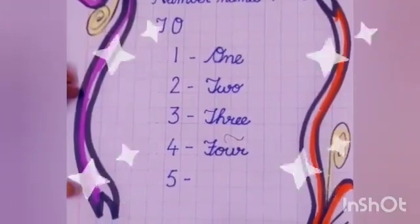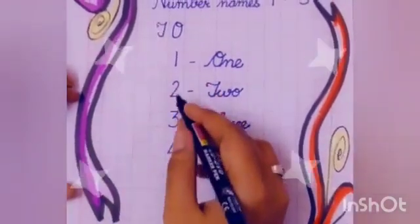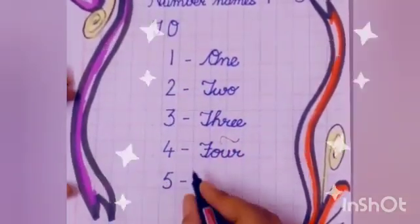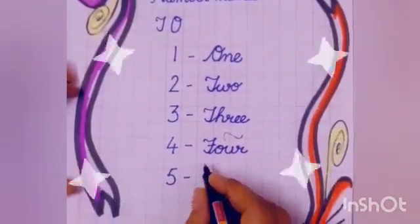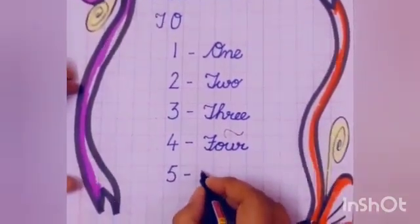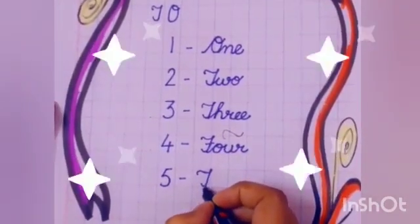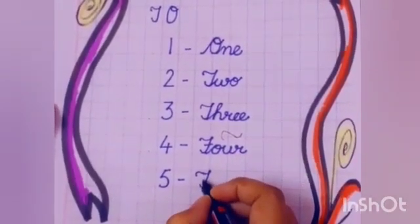Next number is, let's count: 1, 2, 3, 4, 5. F-I-V-E, 5.